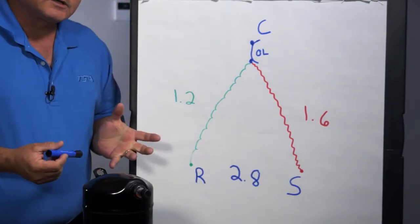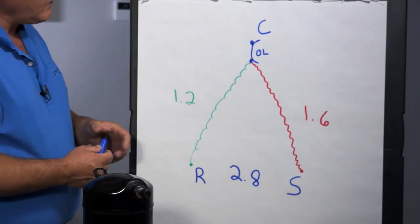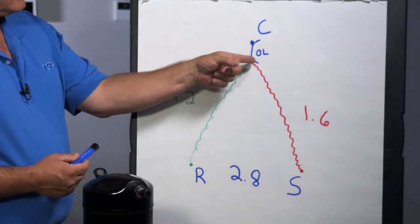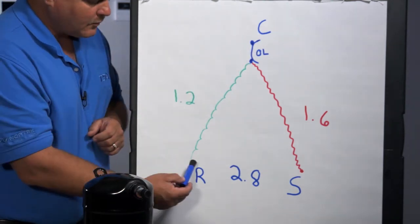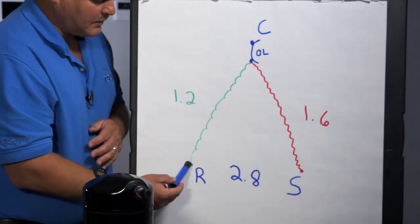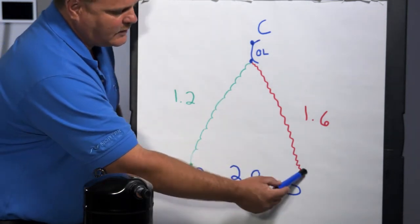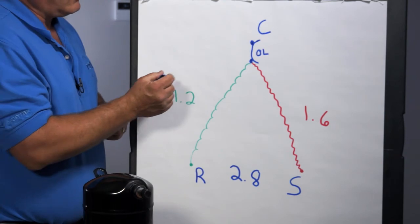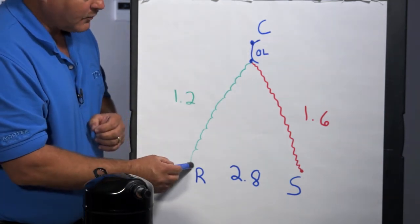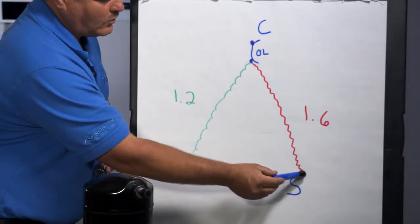So then the other one is open overload. If I have an open overload, and that's what I got drawn in the picture here, if that overload is open, you will get a reading between run and start because you've got an electrical path through the windings from run to start. If the overload is open, you won't get a reading from run to common or start to common.